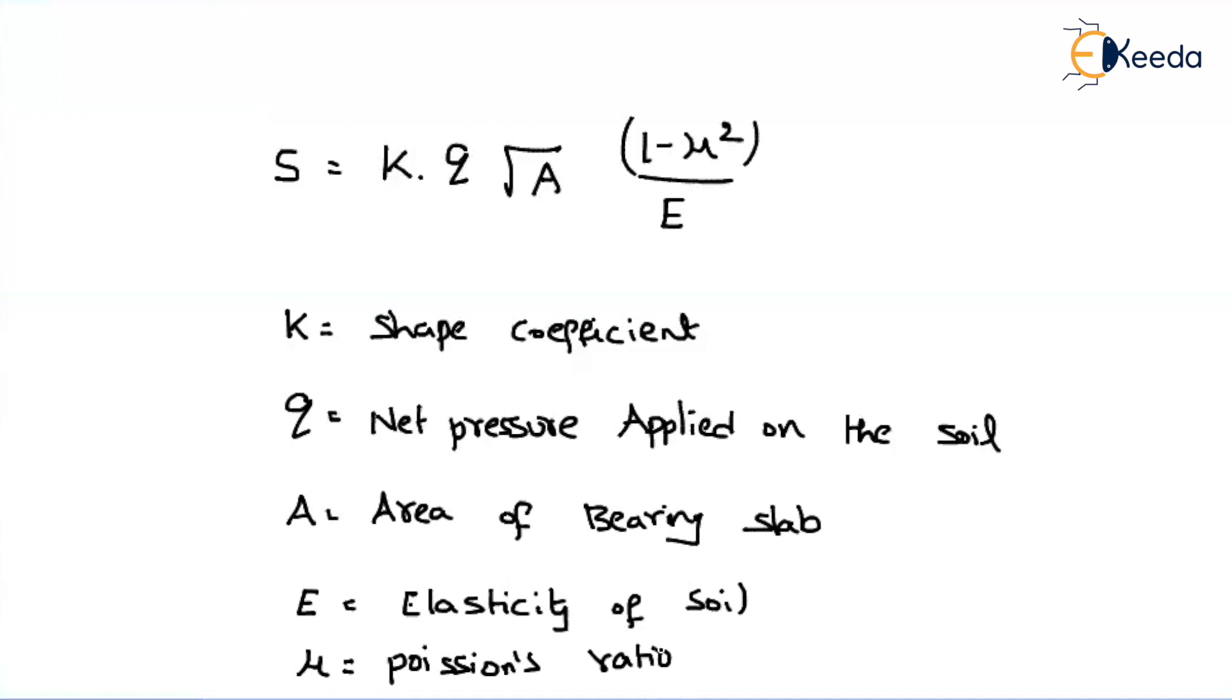For the gate exam point of view, just by heart this formulae. They will give you all the parameters, including K. They will give you modulus of elasticity, they will give you Poisson's ratio. Just we have to find out what is the settlement under the footing. That's it.